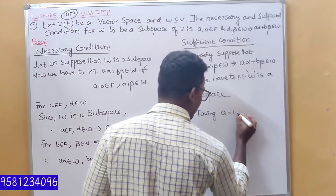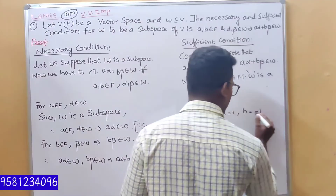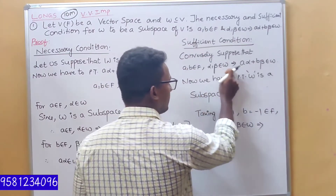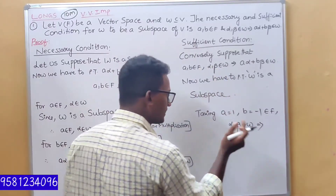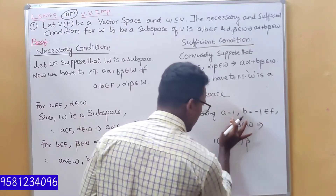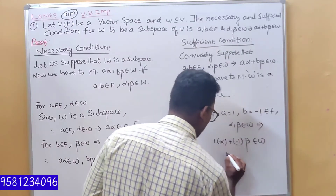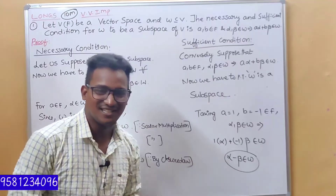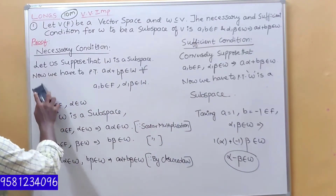First part: this is a subspace. Taking A=1, B value minus 1. We have to prove — for alpha and beta in W, 1·alpha plus (-1)·beta = alpha minus beta belongs to W. Condition number 1 is equal to subspace. A belongs to F, B is equal to 0. Suppose that A belongs to W — condition number 2.